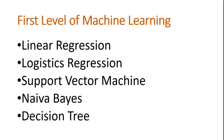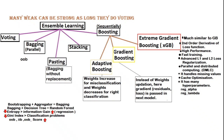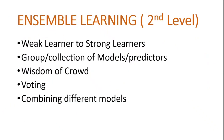We have a first level of machine learning algorithms that we do at the start, which includes Linear Regression, Logistic Regression, Support Vector Machine, Naive Bayes, and Decision Tree. These are all separate algorithms. This is the first level. The second level we call Ensemble Learning. After that, we have deep learning and transfer learning, which are the third or fourth level.